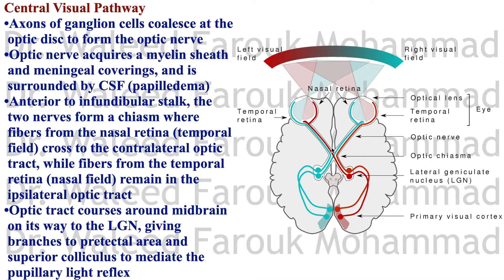The optic tract courses around the midbrain on its way to the lateral geniculate nucleus (lateral geniculate body), where further processing of the image occurs. Along the way, it gives branches to the pretectal nucleus and the superior colliculus to mediate the pupillary light reflex — as we discussed when studying sections of the midbrain.